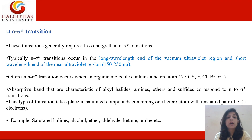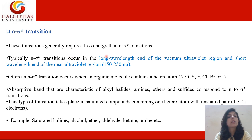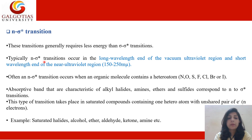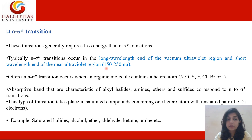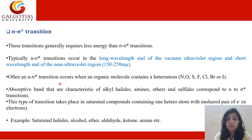The next transition is n to sigma star. These transitions generally require less energy compared to sigma to sigma star transitions. Typically, n to sigma star transitions occur at the long wavelength end of the vacuum ultraviolet region and the short wavelength end of the near ultraviolet region — that is, from about 150 to 250 millimicrons.